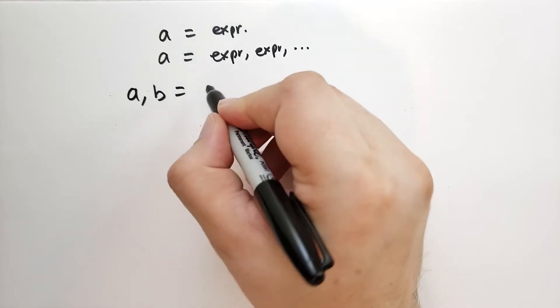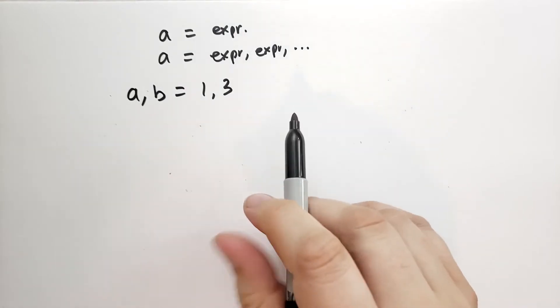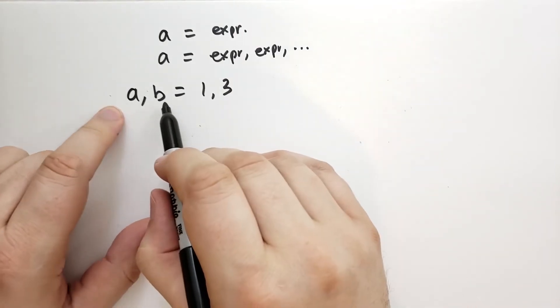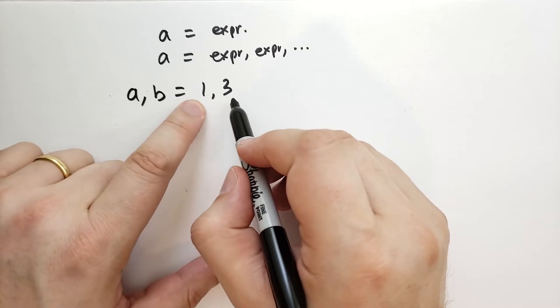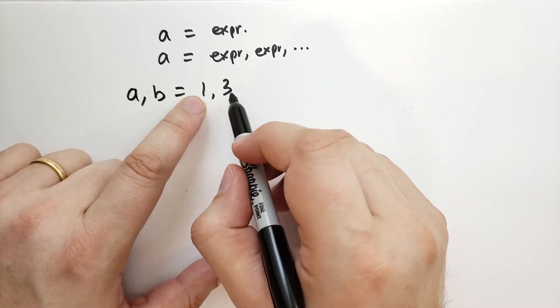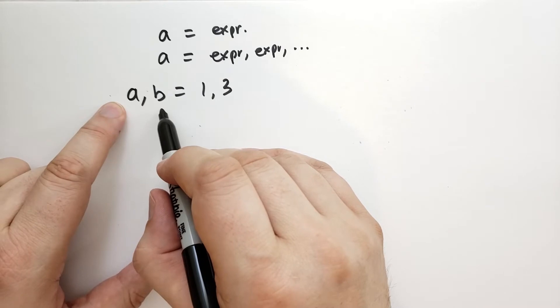Let's say we said a, b = 1, 3. What this does is it interprets this as what might be thought of as a tuple of identifiers. It interprets this as a tuple and then it tries to assign each element from this to each identifier over there.